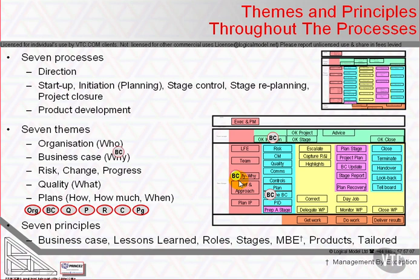The business case starts in outline as the justification in starting up a project, which allows us to ask the project board to authorize initiation. If they say yes, then defining the strategies and building the control pattern, we create a business case that properly reflects the costs that will be incurred both for the production of the products and for the control of the project, and the degree of risk that we're suffering. We refresh that at the end of each stage, and the project board reviews it to decide whether or not they're going to authorize the project to continue.